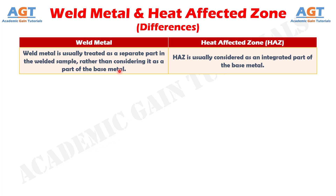Difference Number 1: Weld Metal is usually treated as a separate part in the welded sample, rather than considering it as a part of the base metal, whereas Heat Affected Zone is usually considered as an integrated part of the base metal.